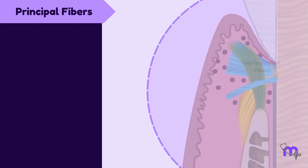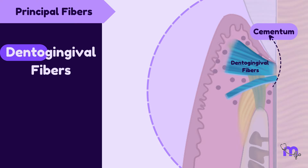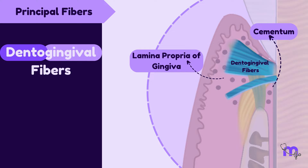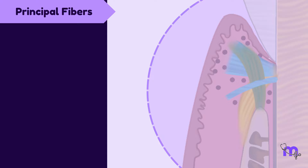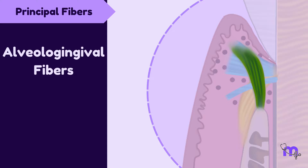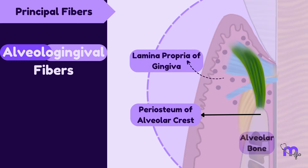Starting with the dento-gingival fibres — the name is quite revealing. 'Dento' indicates their origin from the cementum, while 'gingival' indicates their extension into the lamina propria of the gingiva. Their primary role is to offer support. The next category is the alveolo-gingival fibres. 'Alveolo' suggests their origin from the bone, specifically the periosteum of the alveolar crest, while 'gingival' indicates their coronal progression into the gingiva's lamina propria.